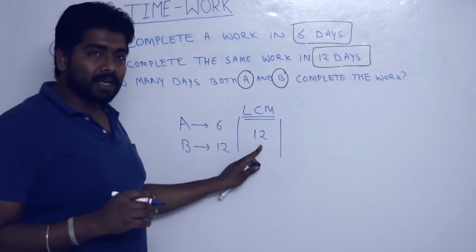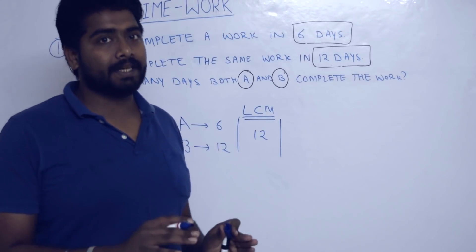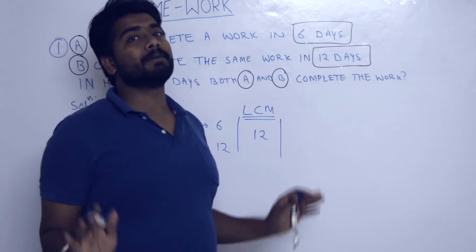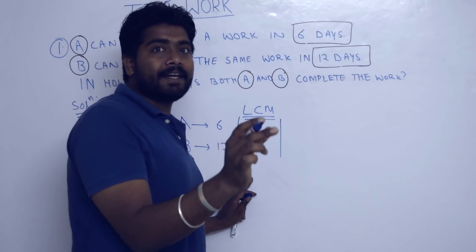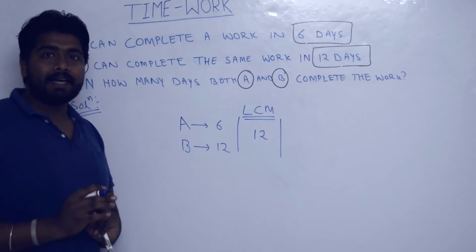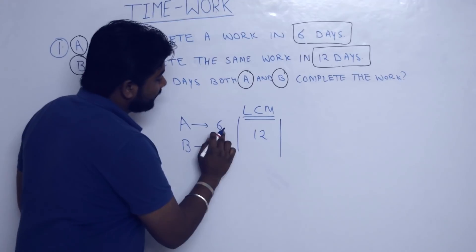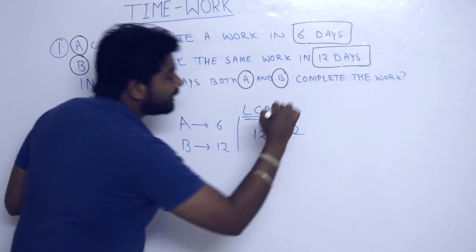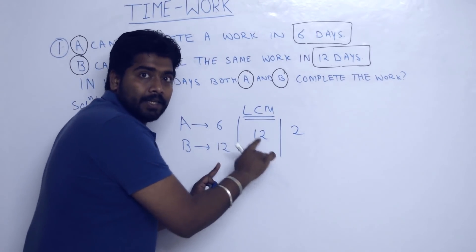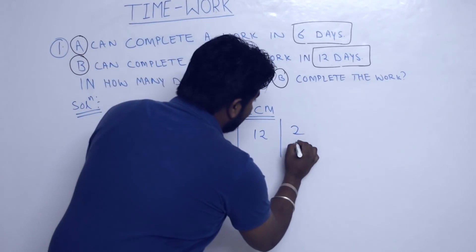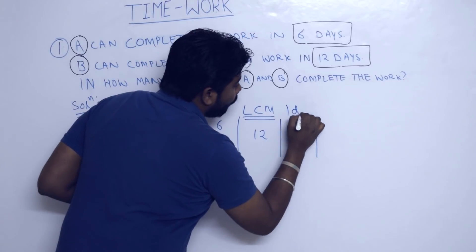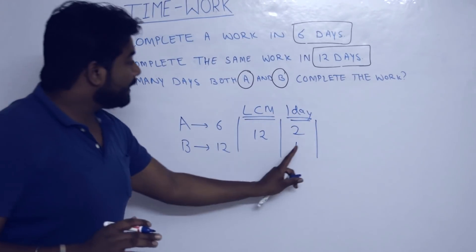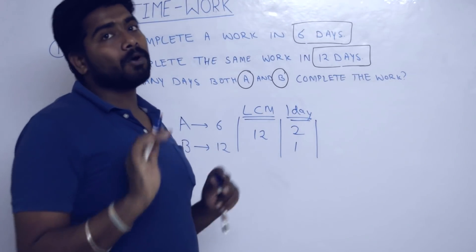This 12 is the total amount of work to be done — think of it as the total number of bricks to be added to the wall to complete the construction. B takes 12 days to add 12 bricks, so B puts one brick per day. A puts 2 bricks per day, and when 12 bricks are placed the work is complete.